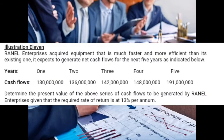Let's look at an example. Ranel Enterprises acquired equipment that is faster and more efficient than its existing one. It expects to generate net cash flows for the next five years: year one — 130 million, year two — 136 million, year three — 142 million, year four — 148 million, year five — 191 million. We are asked to determine the present value of this series of cash flows given a required rate of return of 13 percent per annum.